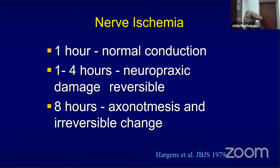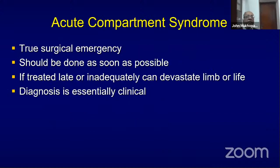Regarding nerve ischemia: up to 1 hour, nerve conduction is normal. Between 1 to 4 hours, you start getting neuropraxic damage, which is reversible. Beyond 8 hours, you may end up with axonotmesis and irreversible damage — a study by Huggins et al., JBJS 1979. Duration of compartment pressure affects nerve function, reversibility, and whether any recovery is possible at all.